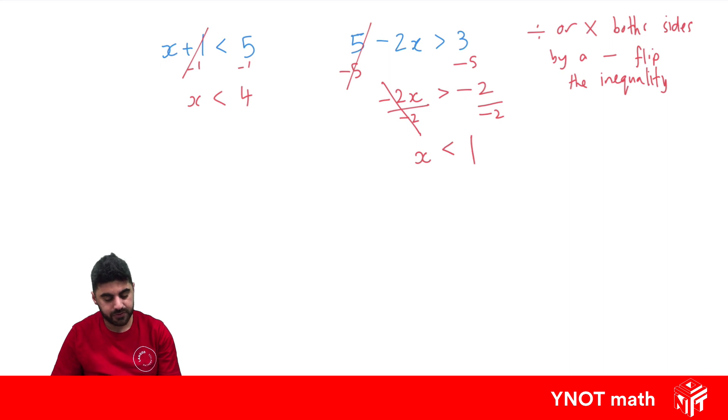And you could try our values here to see if you're correct. So something that's less than 1 is 0. So 2 times 0 is 0, 5 minus 0 is 5, and 5 is greater than 3. So it does hold true.